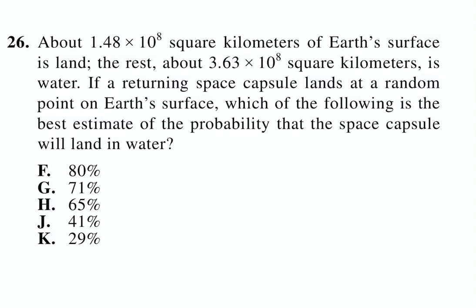About 1.48 times 10 to the eighth square kilometers of Earth's surface is land, and the rest is water. If a returning space capsule lands at a random point on Earth's surface, which of the following is the best estimate of the probability that the space capsule will land in water?